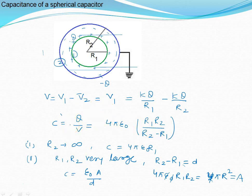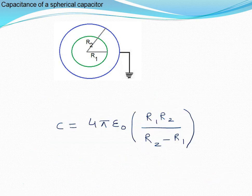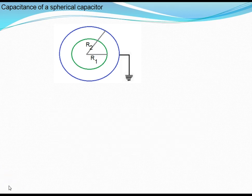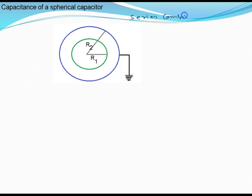The result 4πε₀R1R2/(R2 minus R1) can also be understood as a series combination of parallel plate capacitors, because the spherical capacitor can be thought of as many thin shells connected in series.